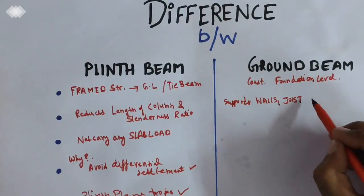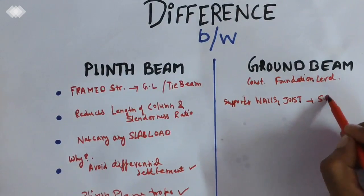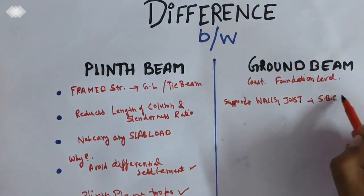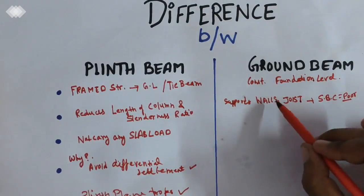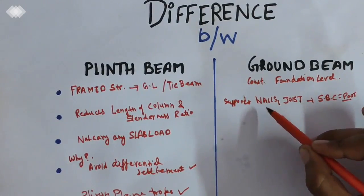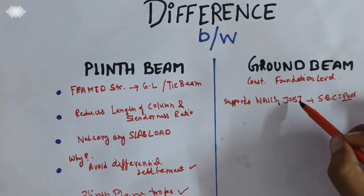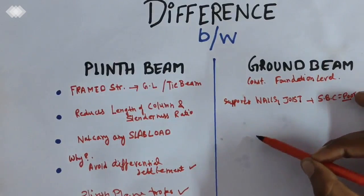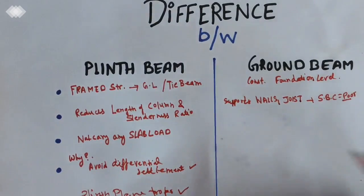The beam provided in the foundation is known as the ground beam. It supports walls or joists. If the soil subgrade has poor bearing capacity, the ground beam acts as a supporting function for the walls and joists.